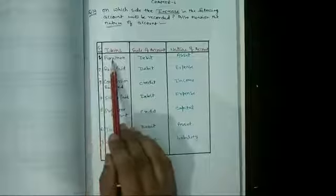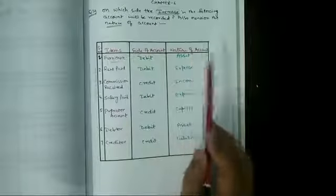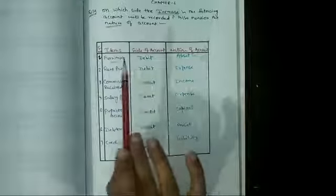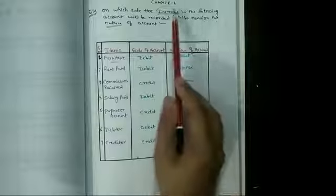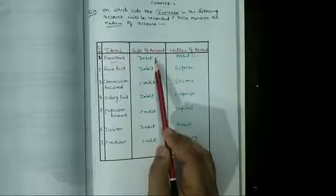The first one is furniture. Furniture, अगर हमारा increase होता, furniture क्या होता? Asset होता है, और asset की value मैंने previous में आपको बताई कि जब increase होता asset तो वो कहां जाता है? Debit में.